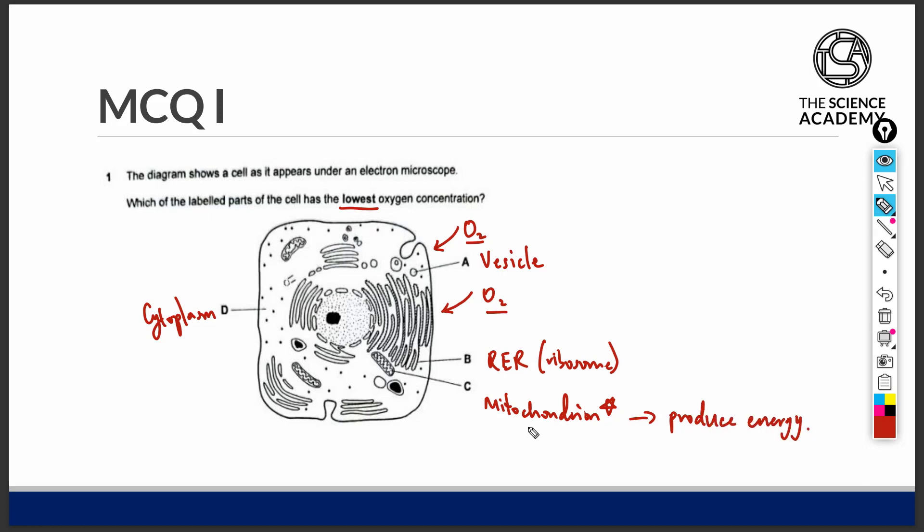This means that the mitochondrion is going to actively consume oxygen, hence making the oxygen concentration at the mitochondrion the lowest.